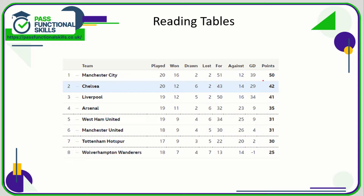You could be asked the question: how many points do West Ham United have? So we find the row that corresponds to West Ham United, go across, and that tells us they have 31 points. Which team has 42 points? Well, let's go down the points column until we see 42 — there's 42.